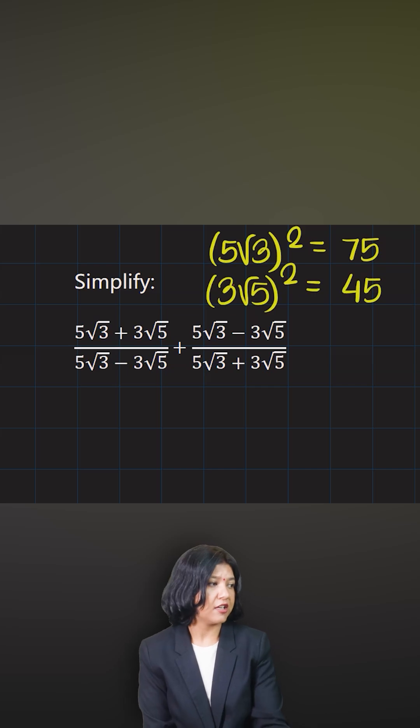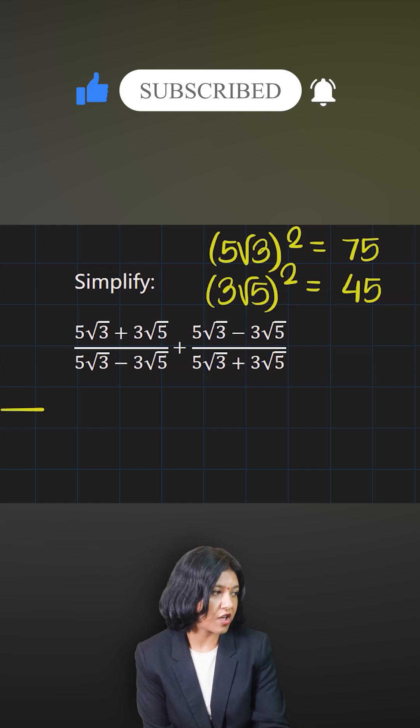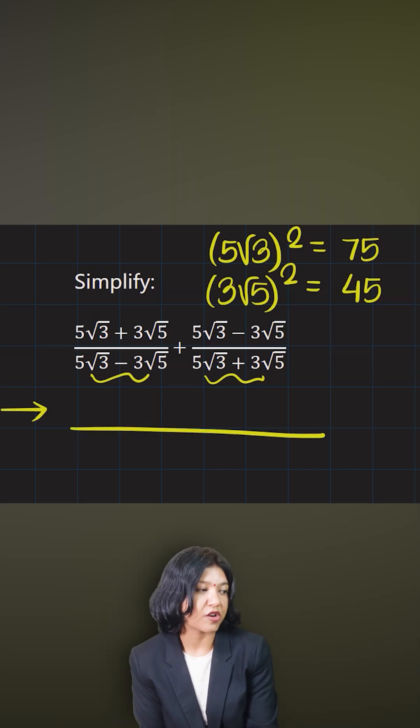Now if you look at this question carefully, the first thing that you should be doing when you see two fractions is you make the denominator common. So here the two denominators are the sum and the difference. So when you have the sum and the difference, the product of that is simply the difference of the squares.